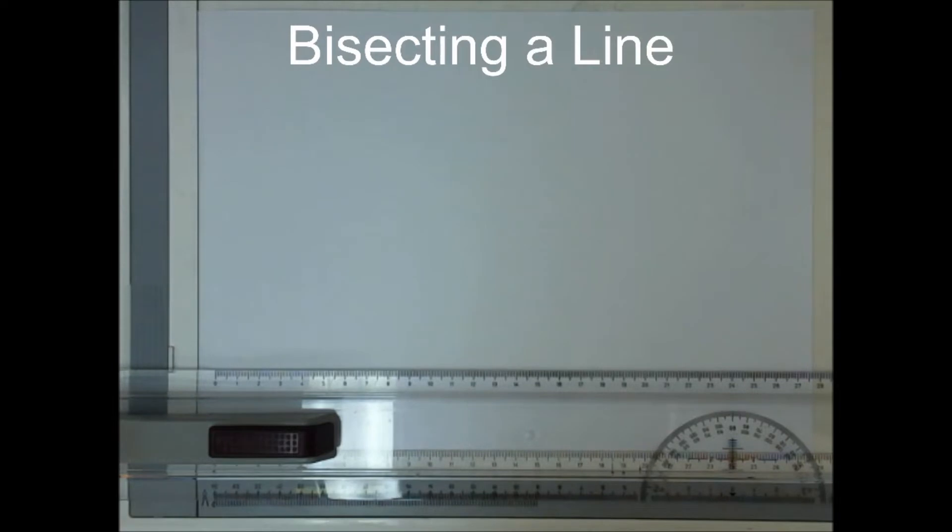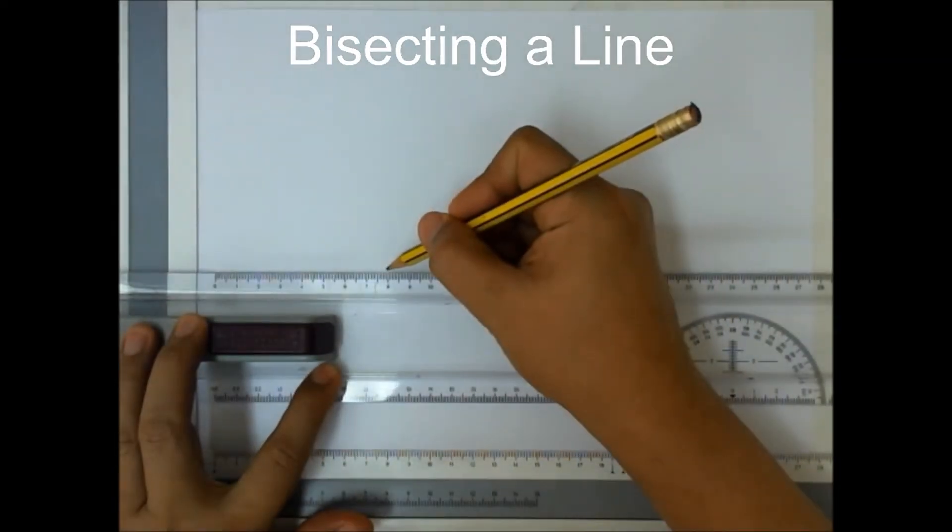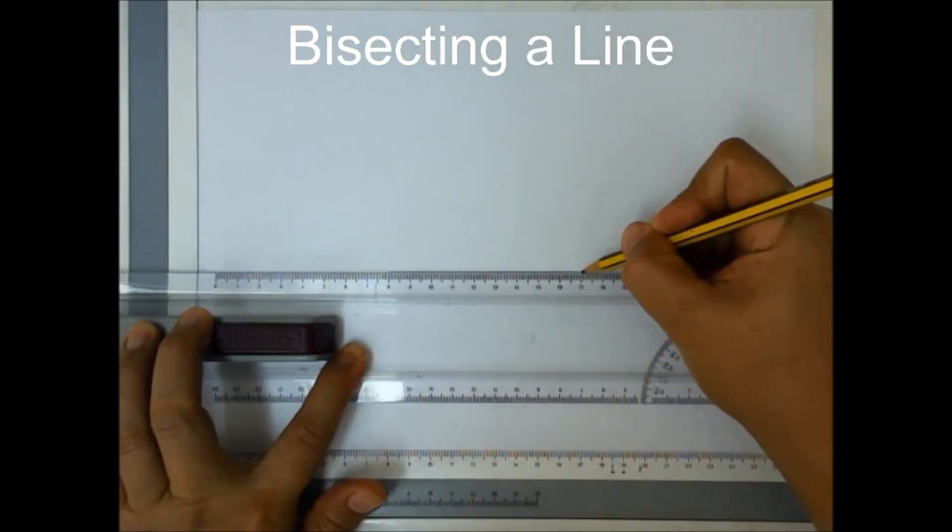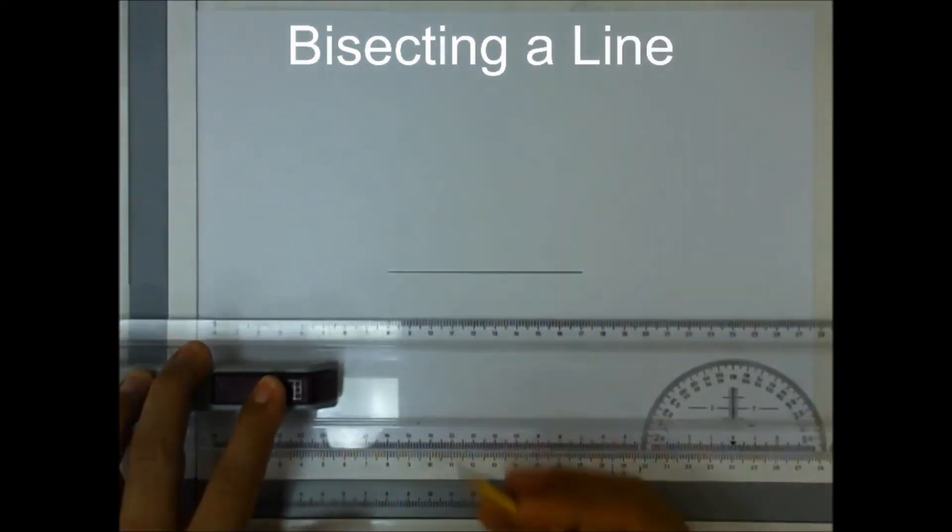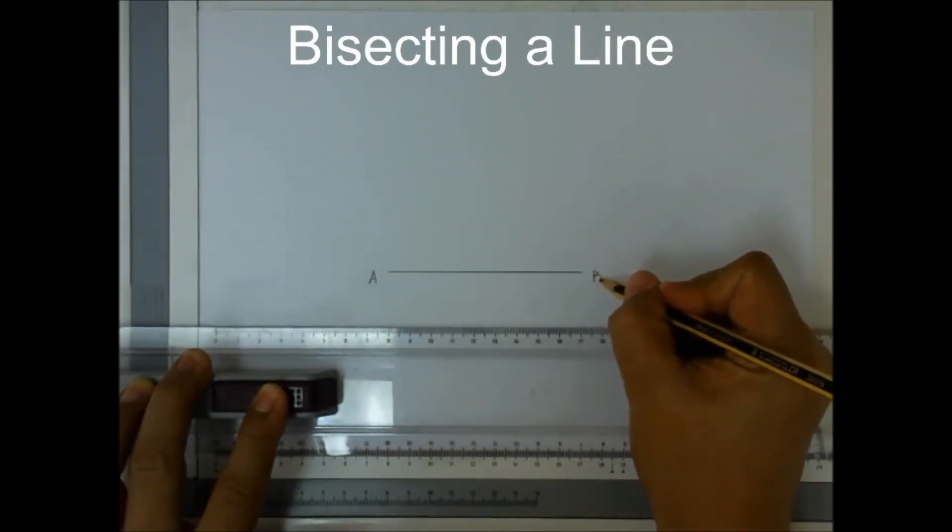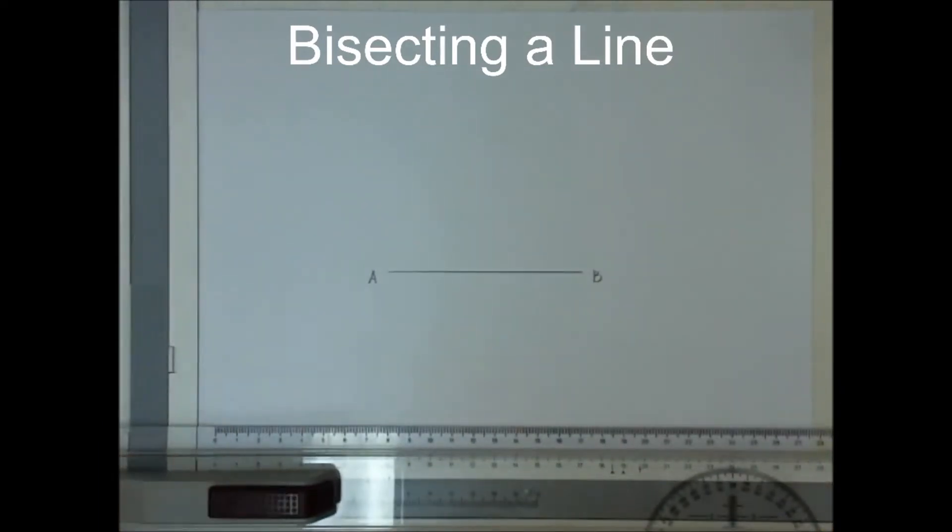To bisect a line, of course, we need our line. Let's have our line from point A to point B. Now we have a horizontal line here.